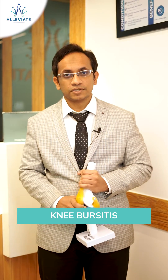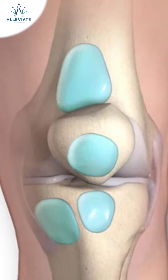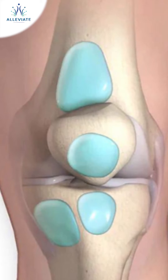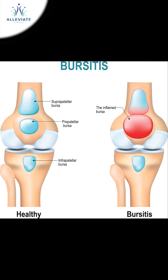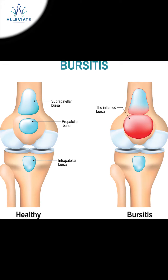Today I will be talking about a condition called knee bursitis. Bursa are small fluid-filled sacs which are present around the knee joint. These sacs provide protection from the excessive friction which is going to happen between the muscles, bones, and tendons around your knee joint region.